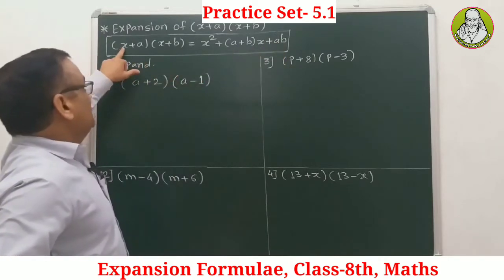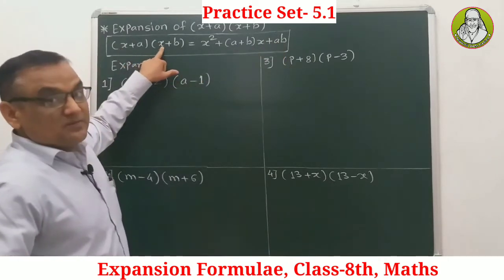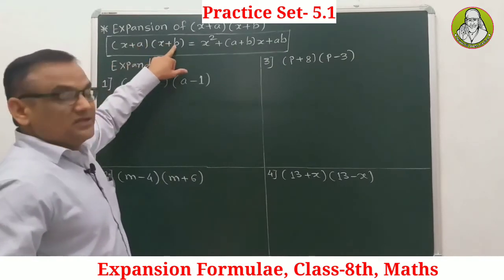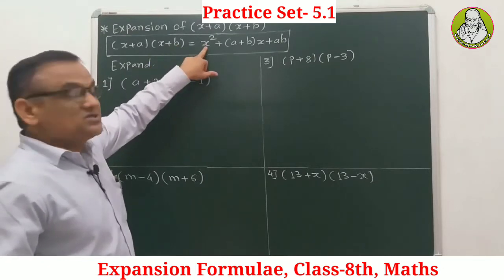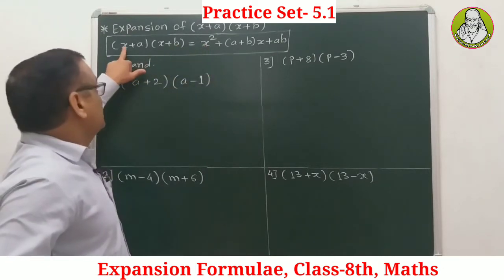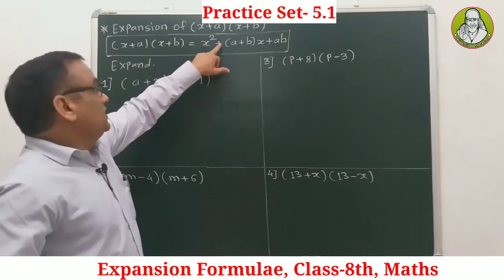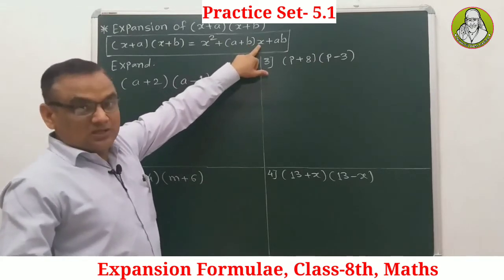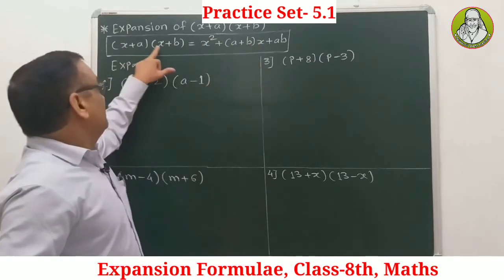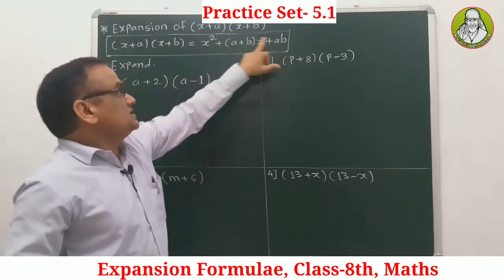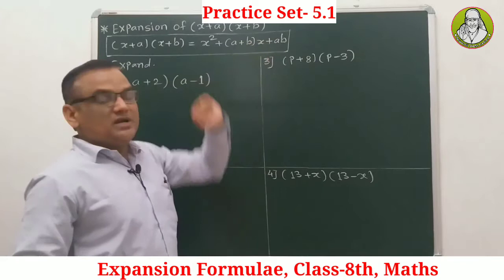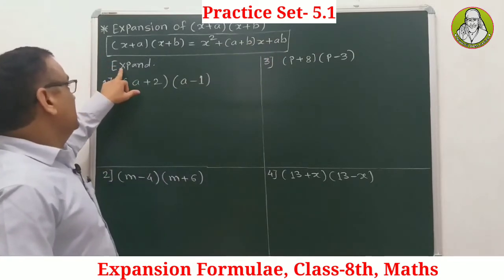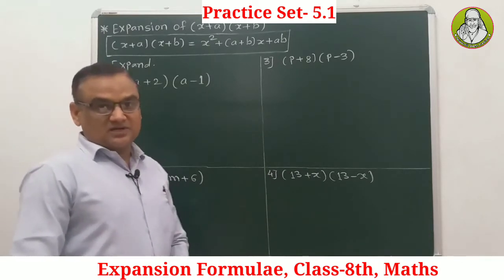Let's understand how many terms are in this formula. The first term is x squared. Then we have (a + b) multiplied by x, which comes from the addition of the two second terms. Finally, we add the product a times b. This gives us three terms in the expansion.